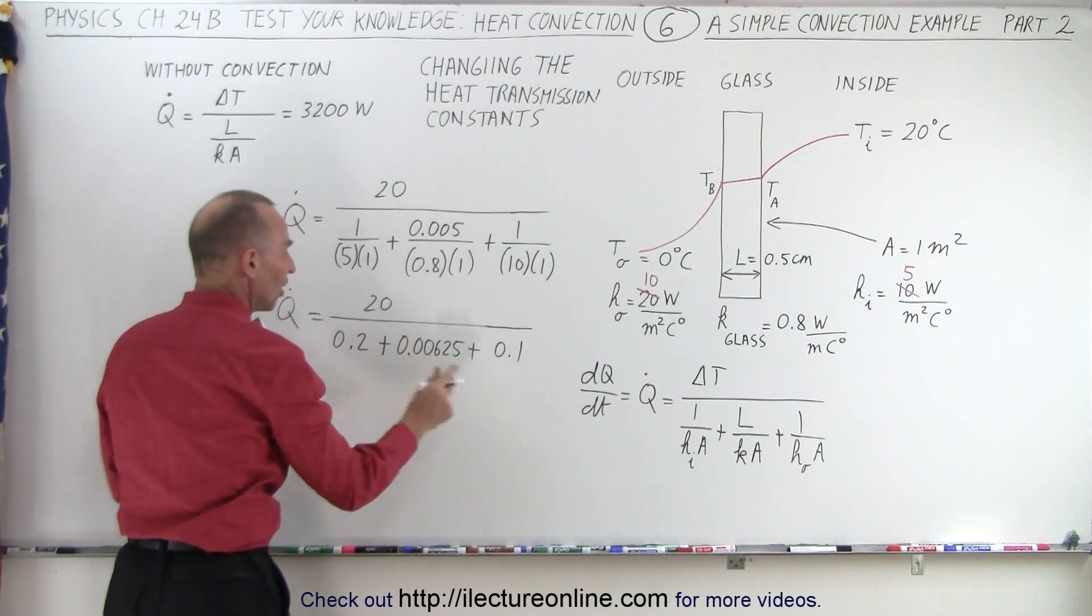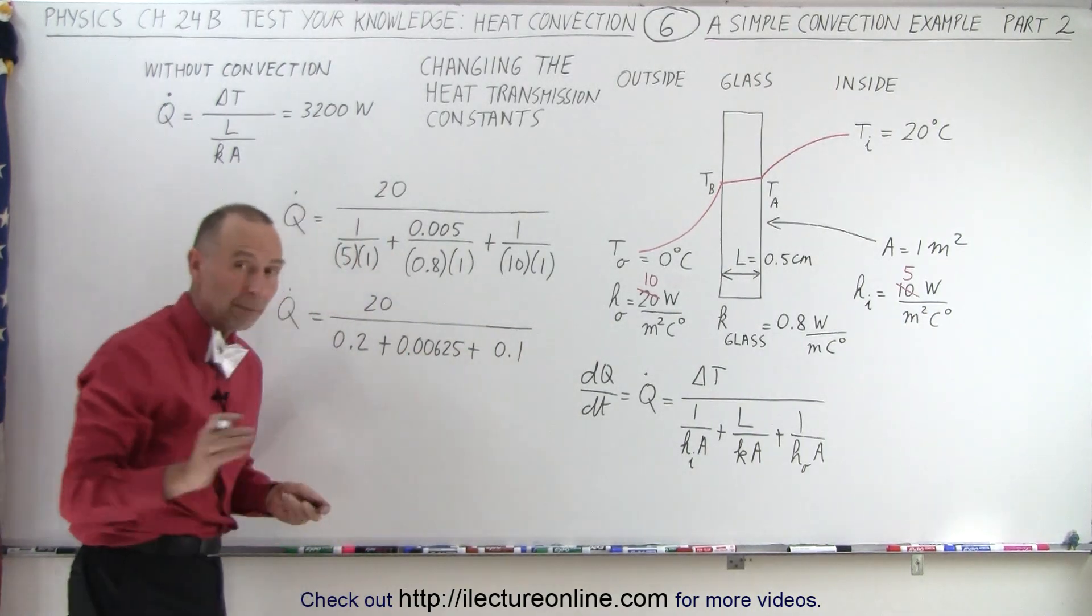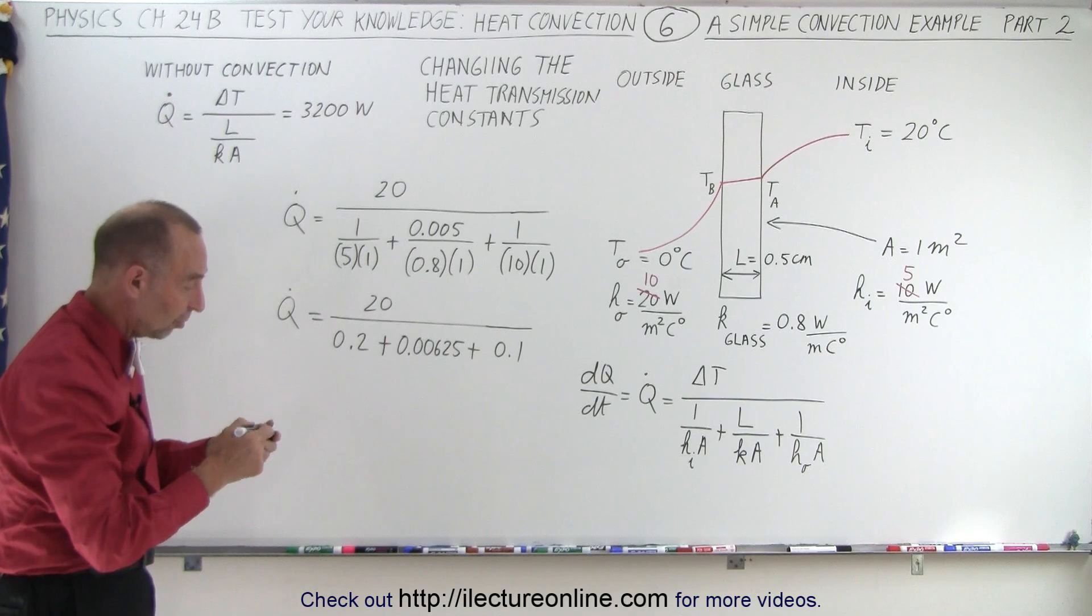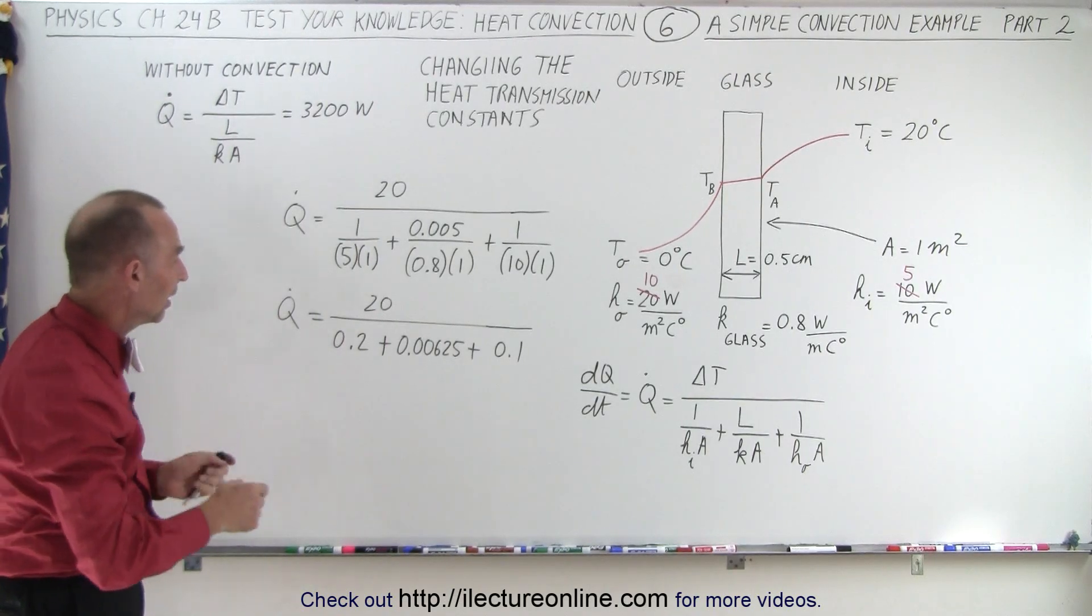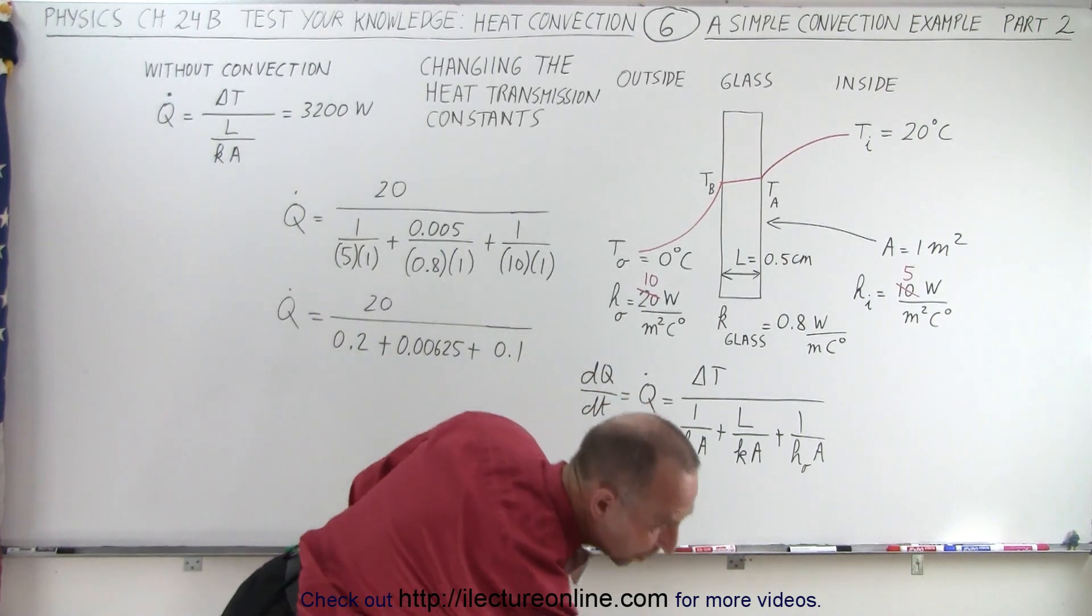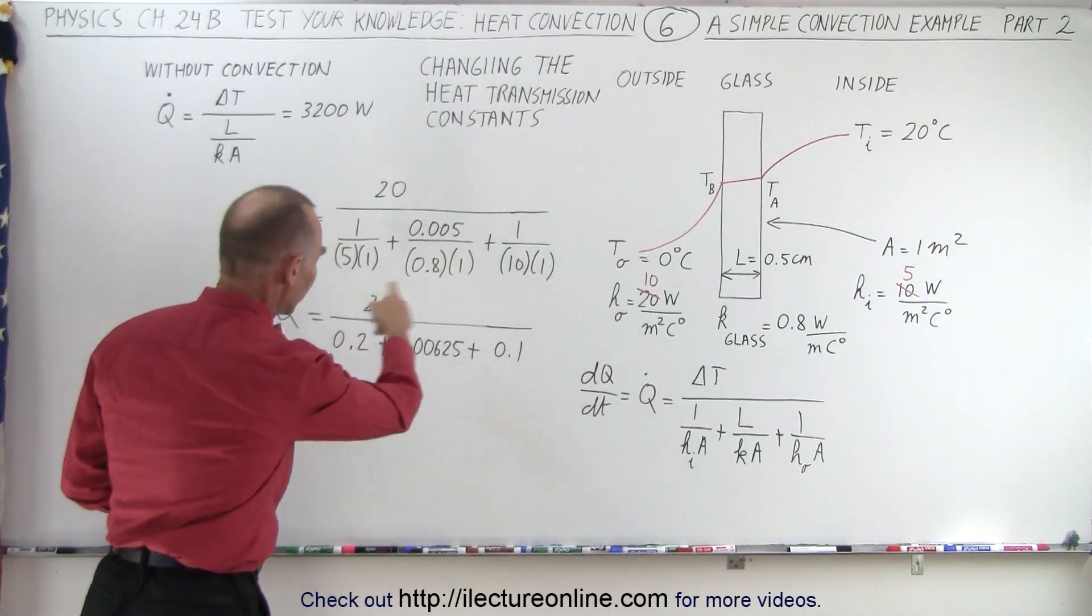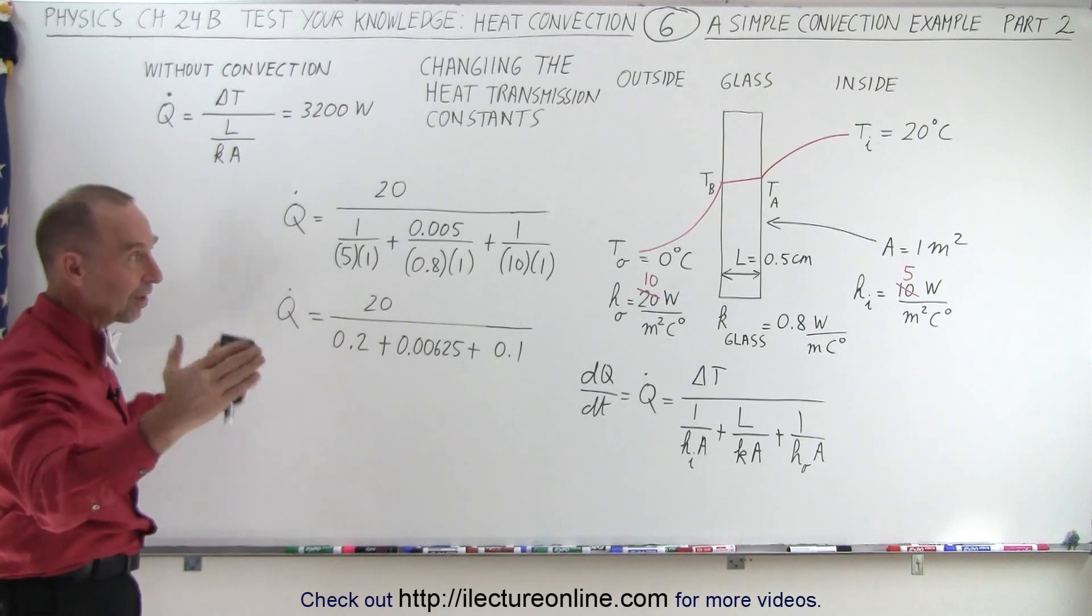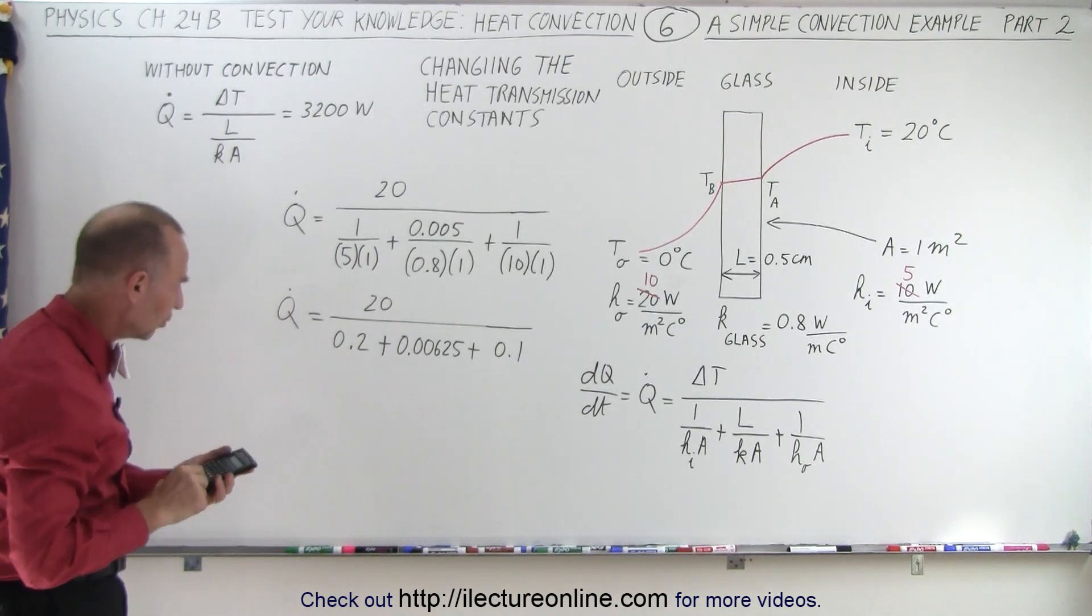So these two values now have changed, they've become larger, and remember those are the heat resistances to the flow of heat. If those go up, we'll have a smaller heat flow through the window. Now nothing has changed at the window itself, but everything has changed on the outside, the inside, because of the convection currents.